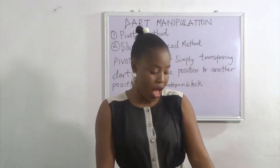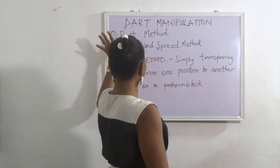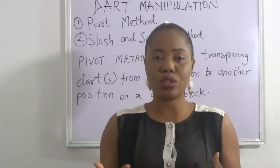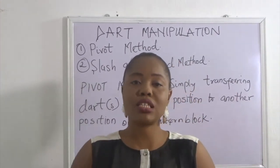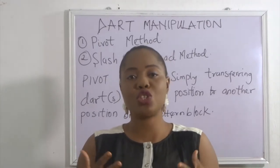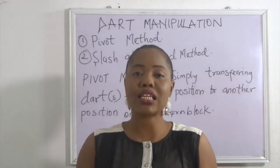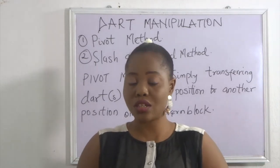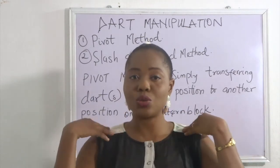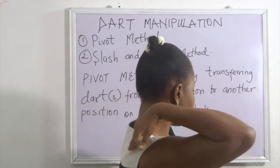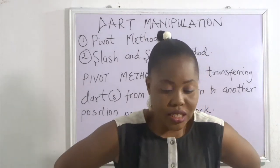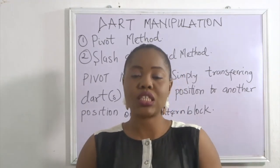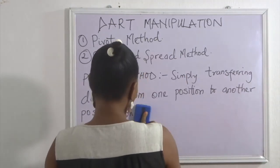Today I'll be teaching you all about dart manipulation. What exactly is a dart? It is what makes your clothes more fitted and gives them shape. Because our body has contours, darts are usually used at the waistline, the shoulder, the back around the shoulder, the waist at the back, and even around the hip.